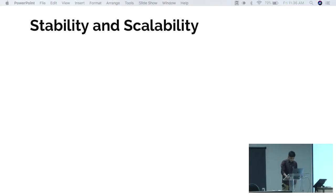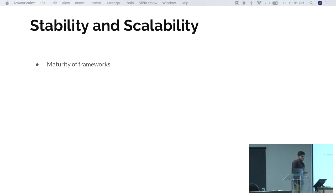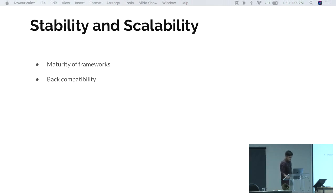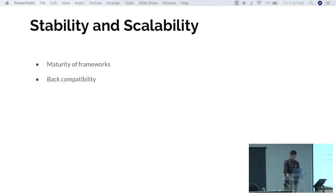This section is more industry-focused: stability and scalability. Maturity of a framework is very important — nobody wants to build their product on a framework launched just one month ago with no user base. The more mature the framework, the more stability it provides. Back compatibility is also very important for long-term projects that need to stay relevant for 10 to 20 years, at least providing packages that can handle previous features.